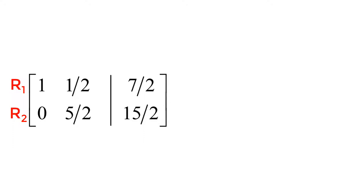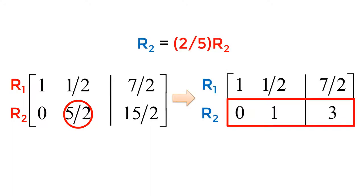The next step is to make five-halves equal to 1. Since I have five-halves, I use the row multiplying operation and multiply two-fifths for each element in the second row. The new elements will be 0, 1, and 3. So I successfully reduced five-halves to 1.